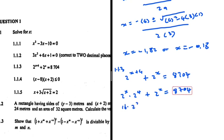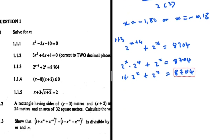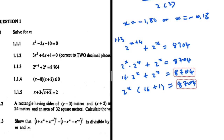2 to the power 4 is 16, so we have 16 multiplied by 2^x plus 2^x equals 8704. We can take 2^x as a common factor — or let k equal 2^x, either way works — giving us 2^x multiplied by (16 plus 1) equals 8704.